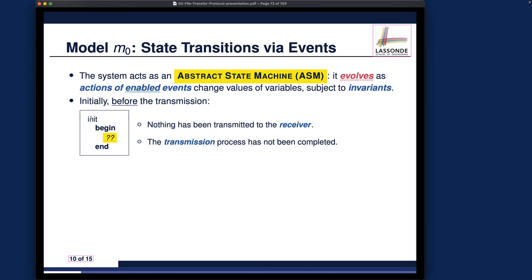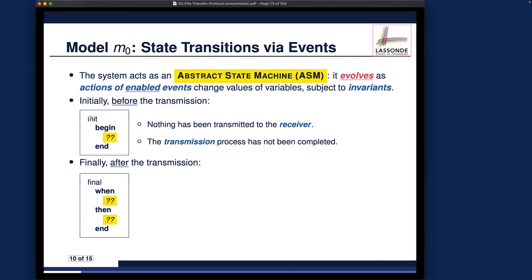The init event should be treated as a special event that occurs only once to initialize the system. You shouldn't reset your system often — normally only when there's an unpredicted error. The only ordinary event for this model is the so-called final event. The name suggests that after the system has been initialized, all we expect is the final event to occur, and as soon as it does, the transmission process is completed. It is abstract, instantaneous, and synchronous, and it has a guard and an action.